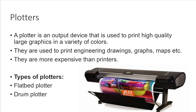Different types of plotters are flatbed plotter and drum plotter. A flatbed plotter is used to draw images on paper and it uses pens for drawing images. A drum plotter uses a rotating drum or cylinder, and the pens move left and right as the drum rotates. It is used to print large panoflexes.